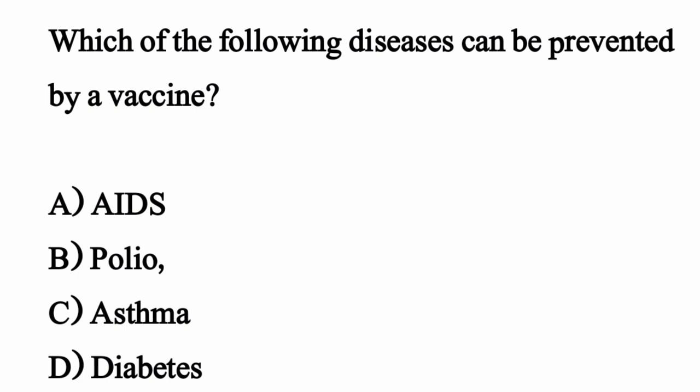Which of the following diseases can be prevented by a vaccine? The correct option is Option B: Polio.